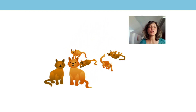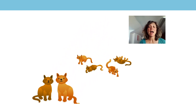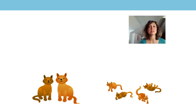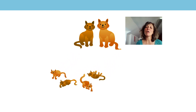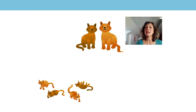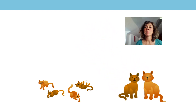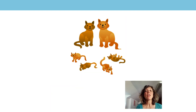You might be able to see lots of things in this picture. I can see that there are two adult cats and four kittens. Did you see that? So how many cats are there all together? That's right, there are six cats all together. Can I also say that there are four kittens and two adult cats? And how many cats are there all together? That's right, there are six cats all together.